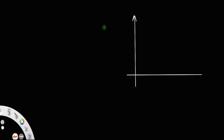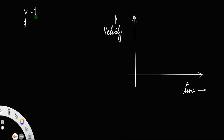Let us derive the first kinematic equation of motion using the graphical method. For that, let us consider a graph in which velocity is taken along the y-axis and time is taken along the x-axis. We usually call this a velocity-time graph, or v-t graph. Similarly, for an s-t graph, that is a displacement-time graph, displacement is taken along the y-axis and time along the x-axis.